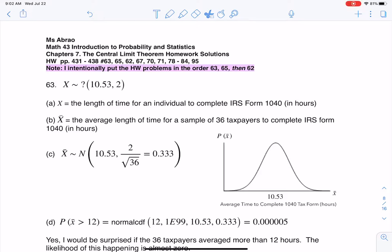Hey Math43, I had a question coming out of Chapter 7, Number 63. We were given information about the IRS and the average length of time it took an individual to complete their 1040. It says the average time it takes is 10.53 hours with a standard deviation of 2.